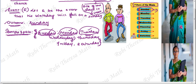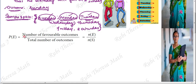We know a formula. What is the formula? P of E — probability of the event happening. You can write any event, any possibility and represent it as P of E. P of E equals the number of favorable outcomes. What is the outcome you are expecting? In the event, there is only one favorable outcome.